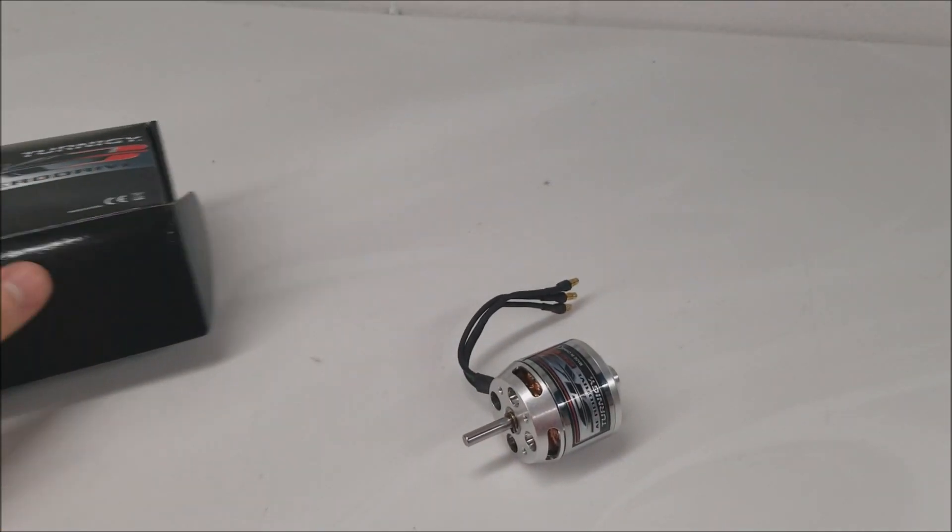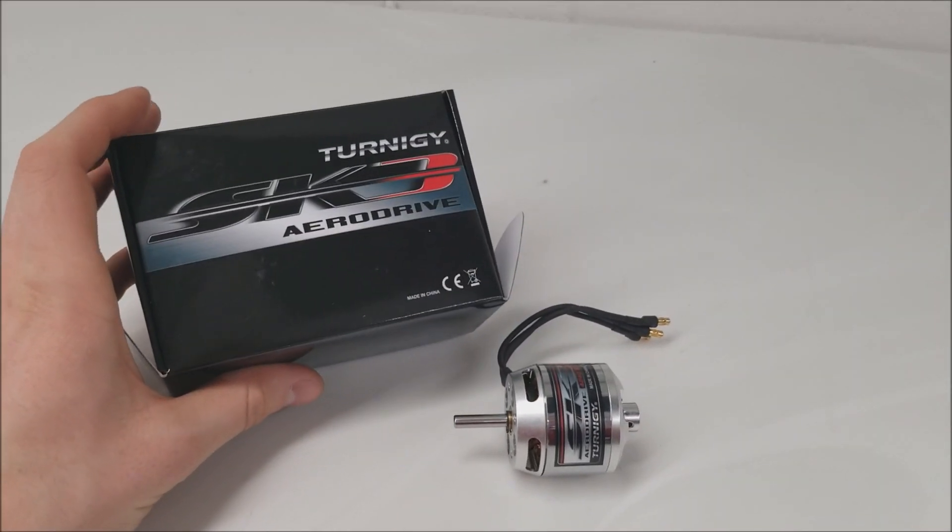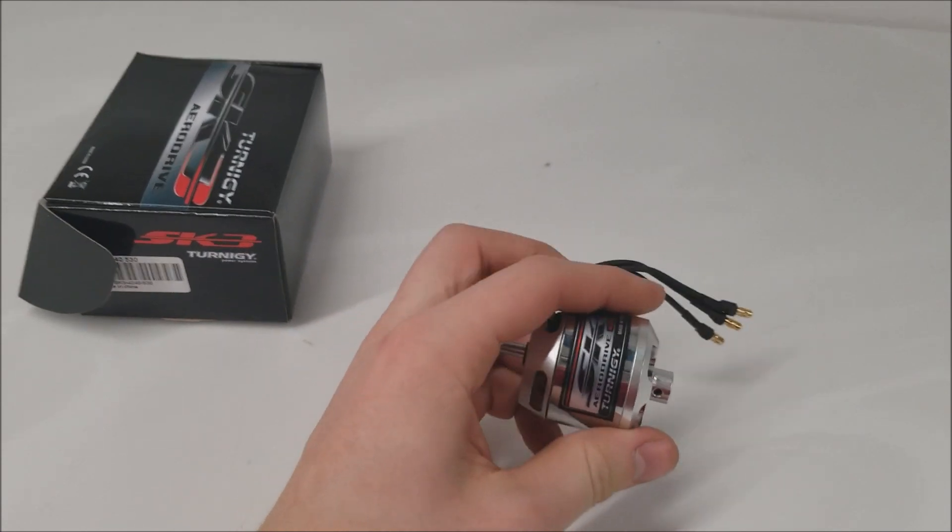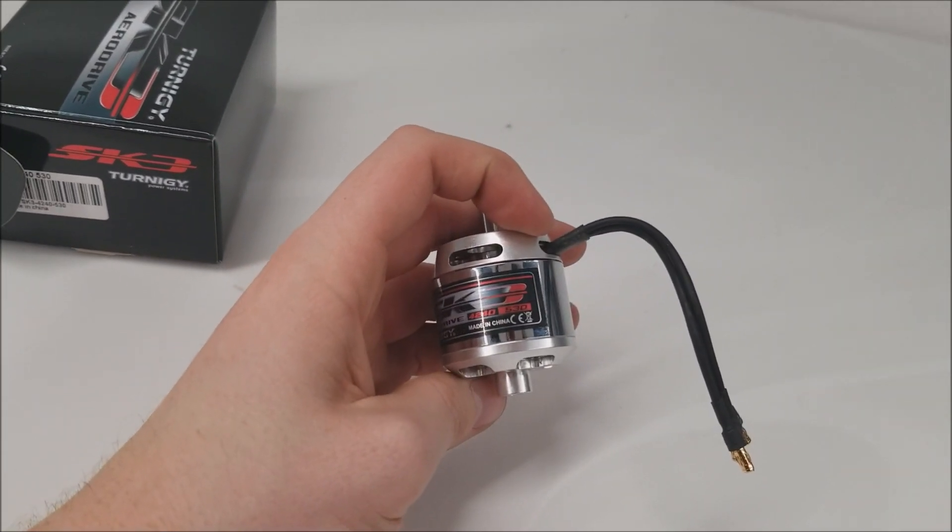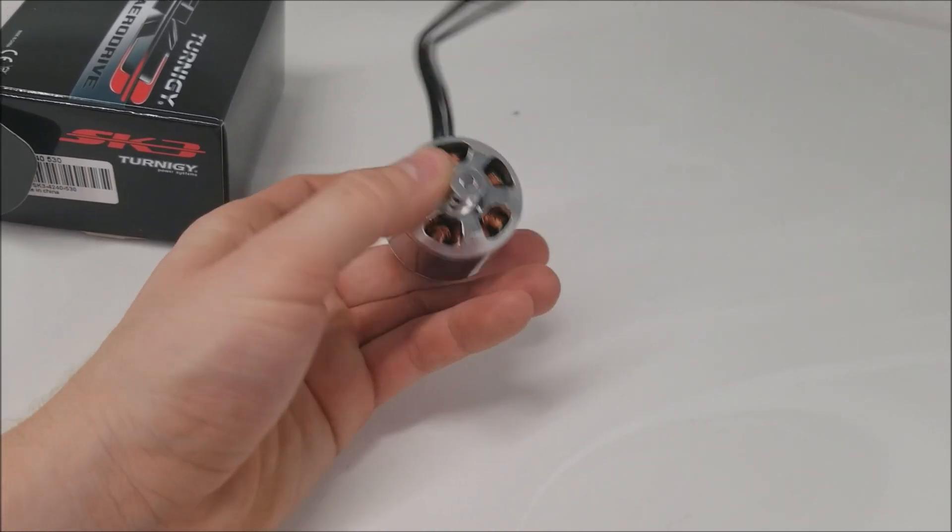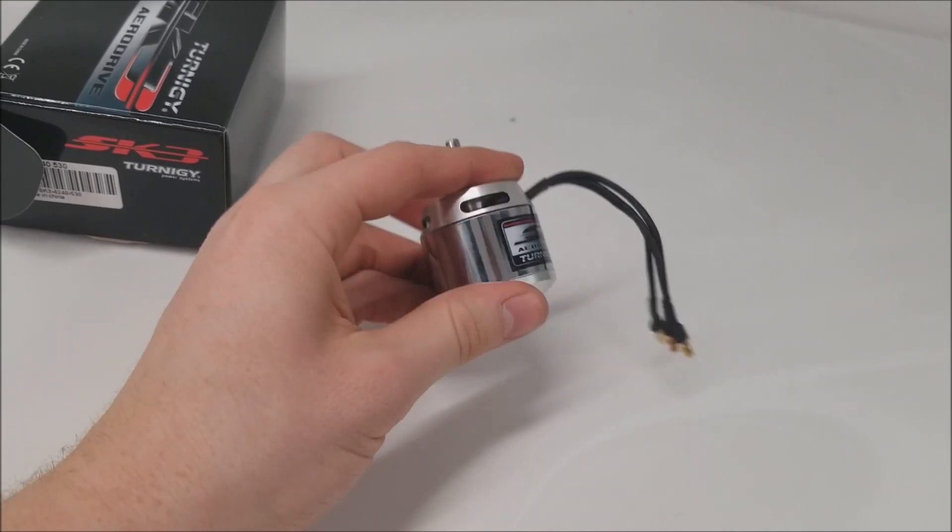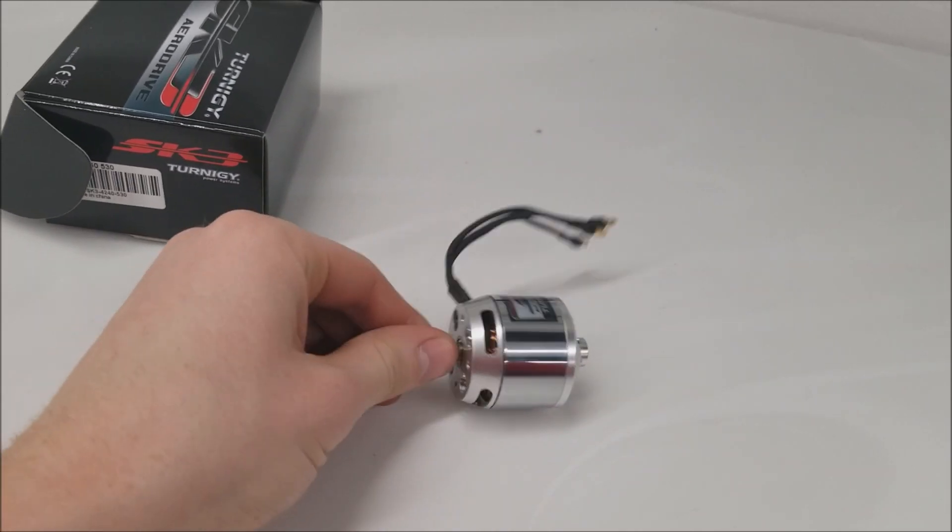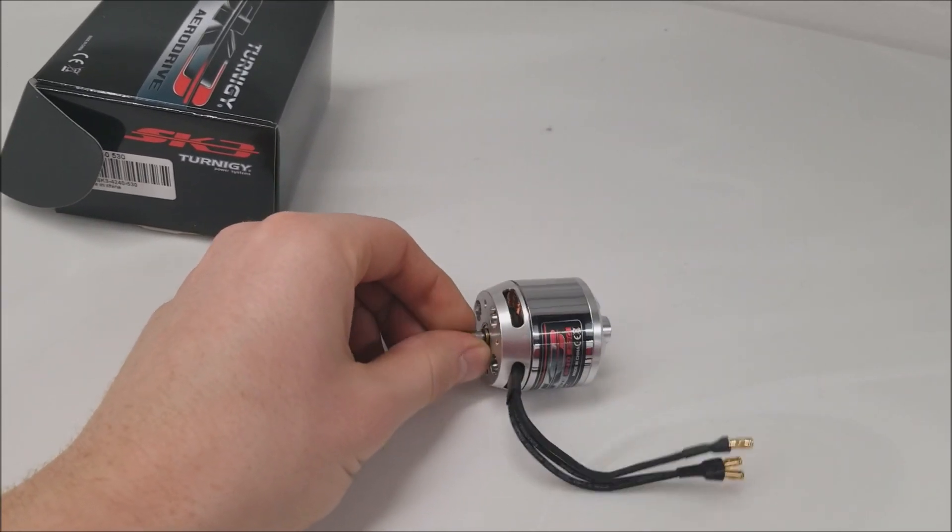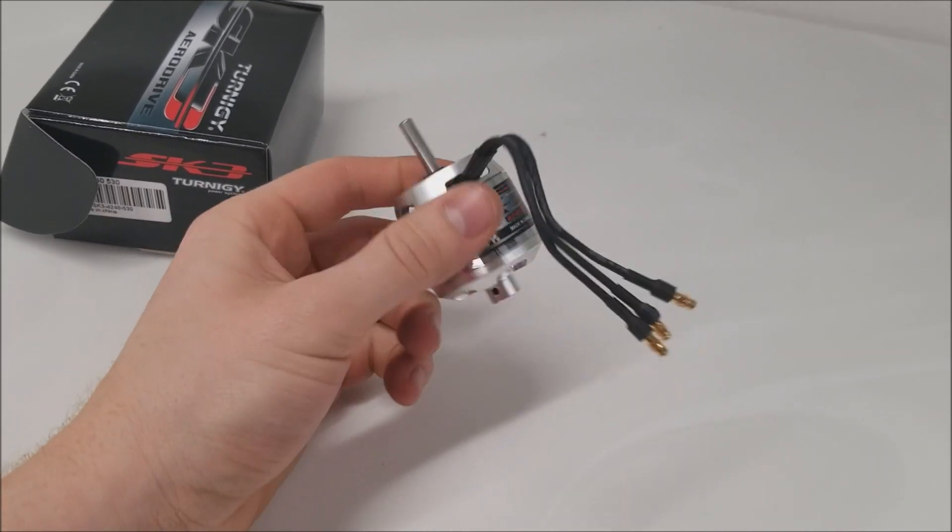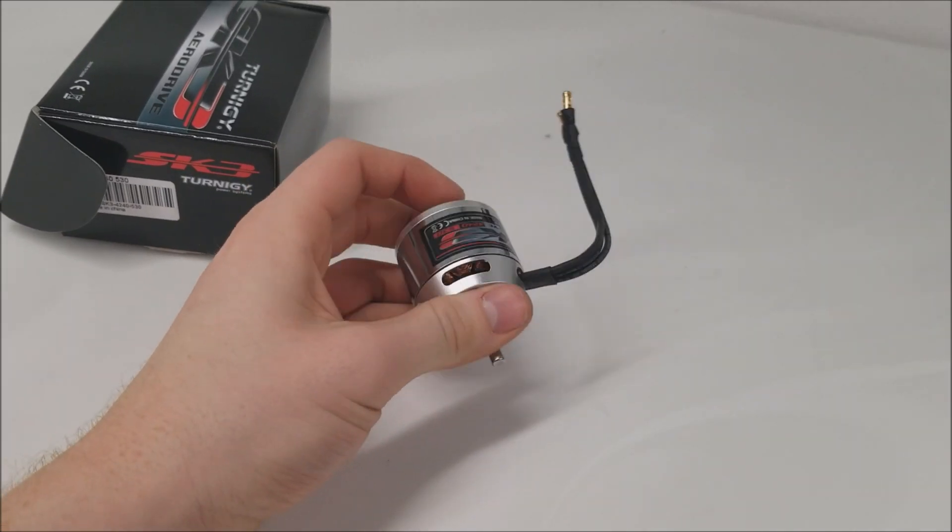I'm going to do this using a Turnigy SK3 Aerodrive OutRunner motor. This takes 4-5S, it's a 530kV, 42mm diameter. It's just a regular airplane brushless OutRunner. I'll be using this for the demo, but this should be able to be applied to other brushless OutRunner motors that are of similar type.